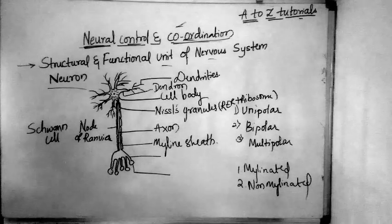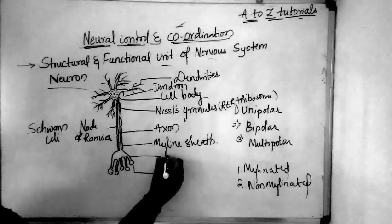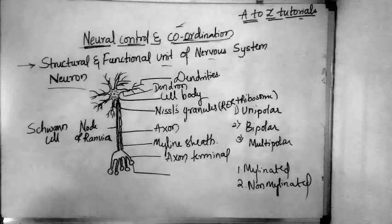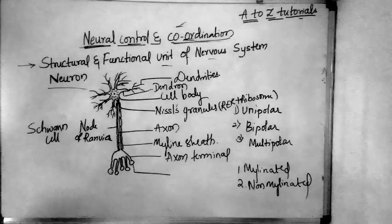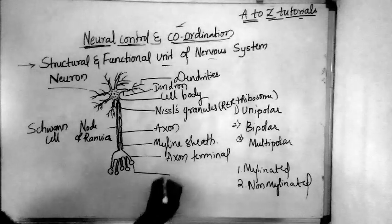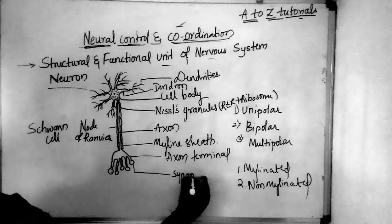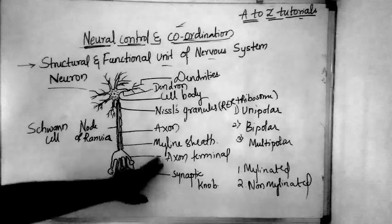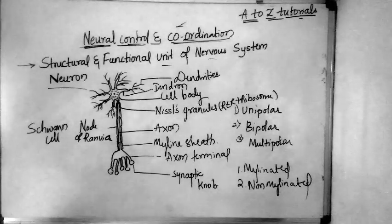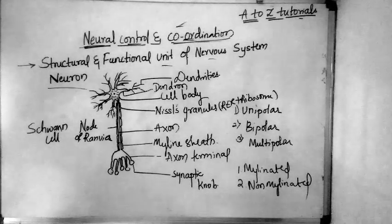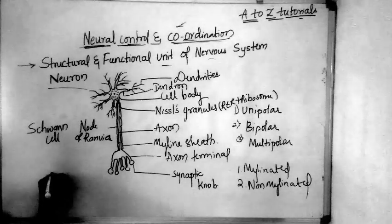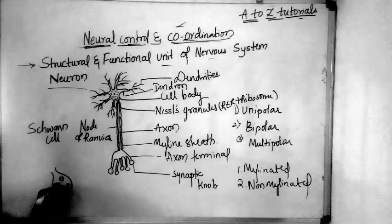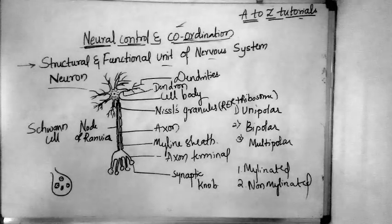The branching of the axon is called the axon terminal. At the end of the axon terminal there is a bulb-like structure called the synaptic knob. Inside the synaptic knob there are synaptic vesicles, and these vesicles contain a chemical called the neurotransmitter.